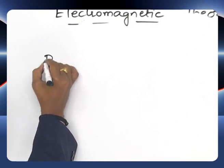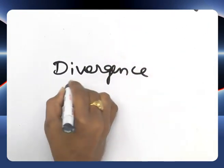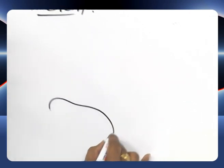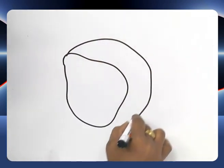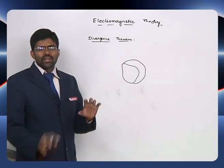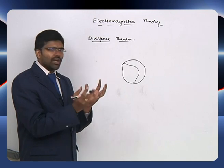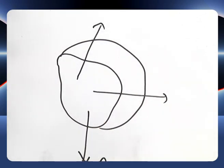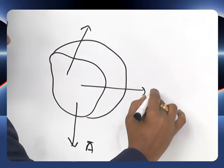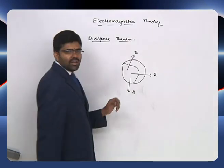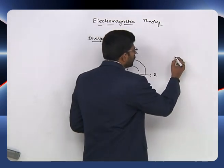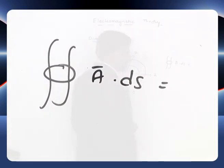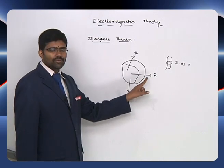Let us consider the divergence theorem. We have a closed surface, and a closed surface always forms a volume. Whenever we have a closed surface, if we want to calculate how much quantity is going out from that surface — let us say A-bar is leaving the surface — the flux leaving the surface can be calculated using the closed surface integral of A-bar dot ds.